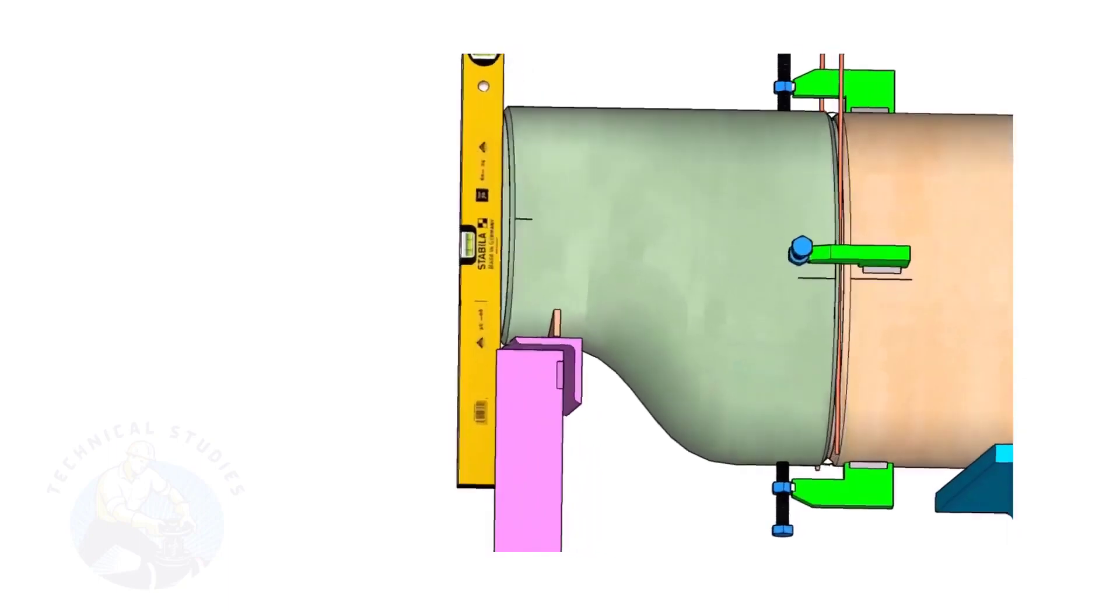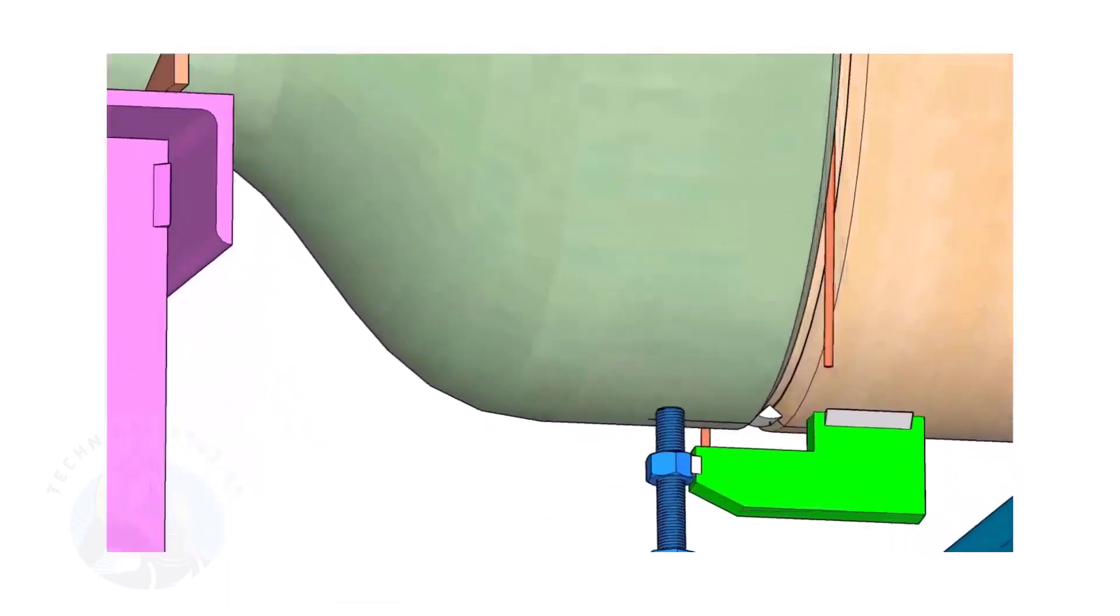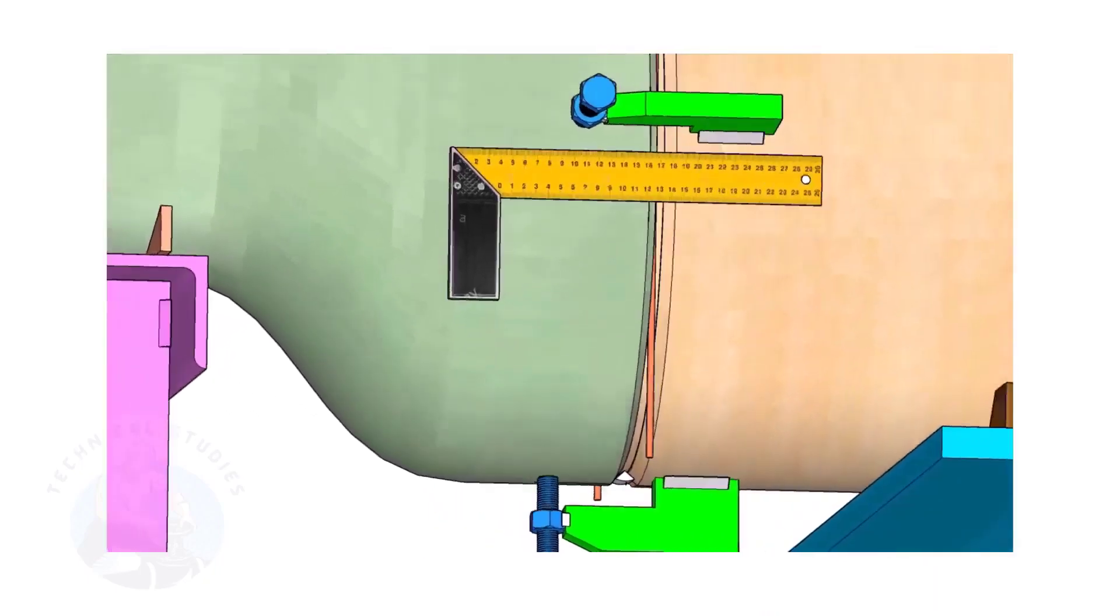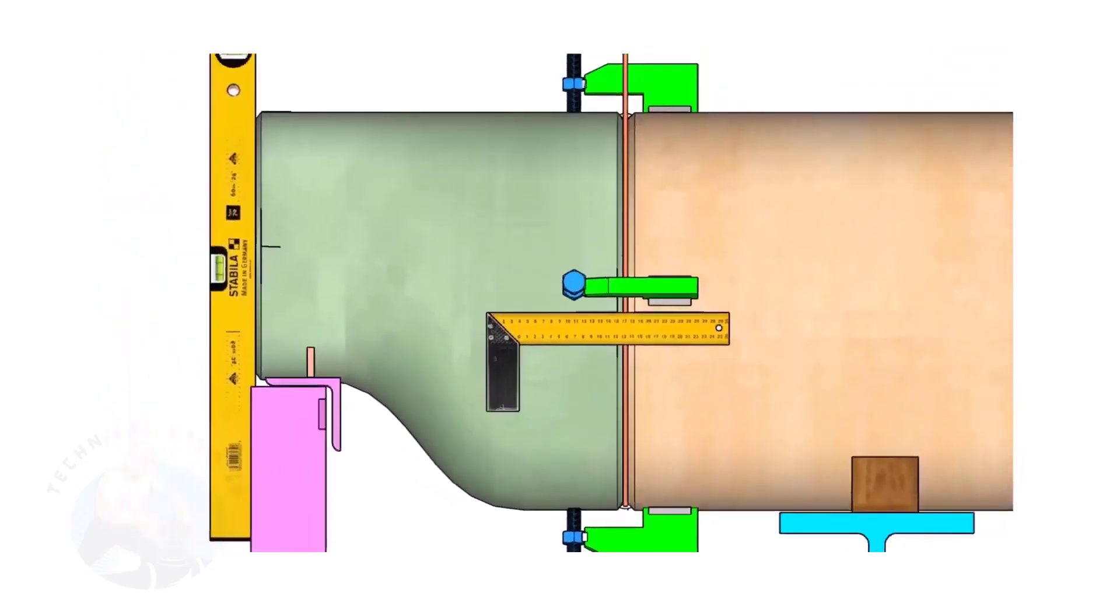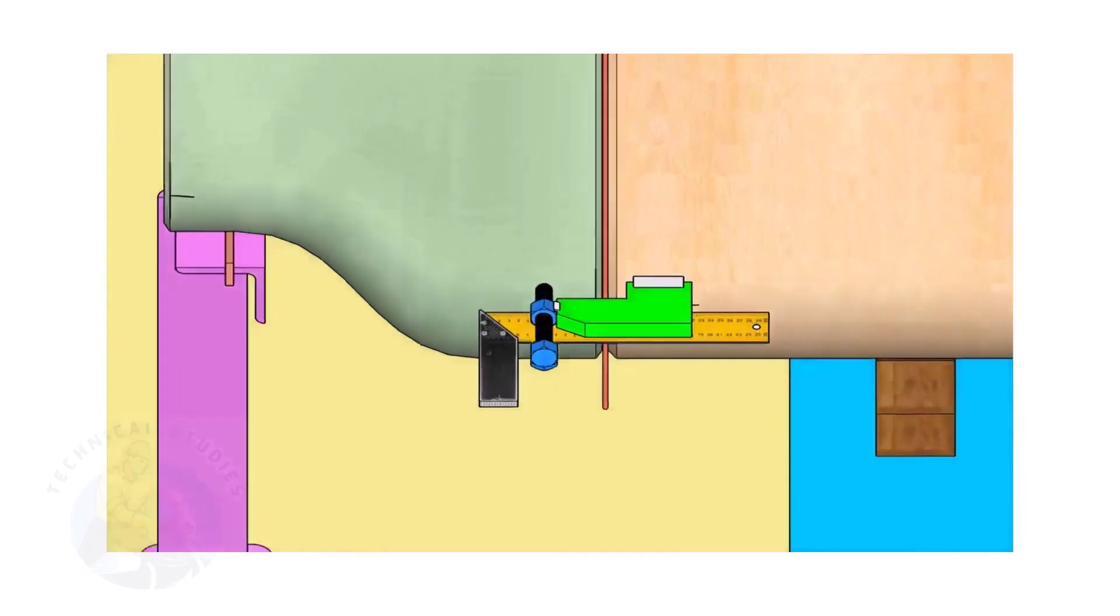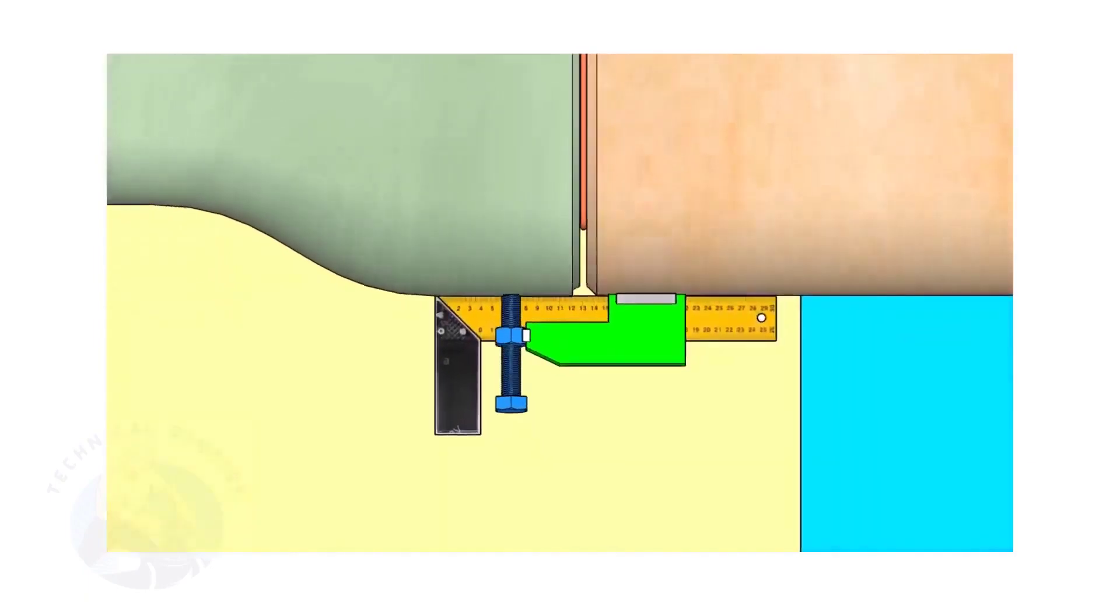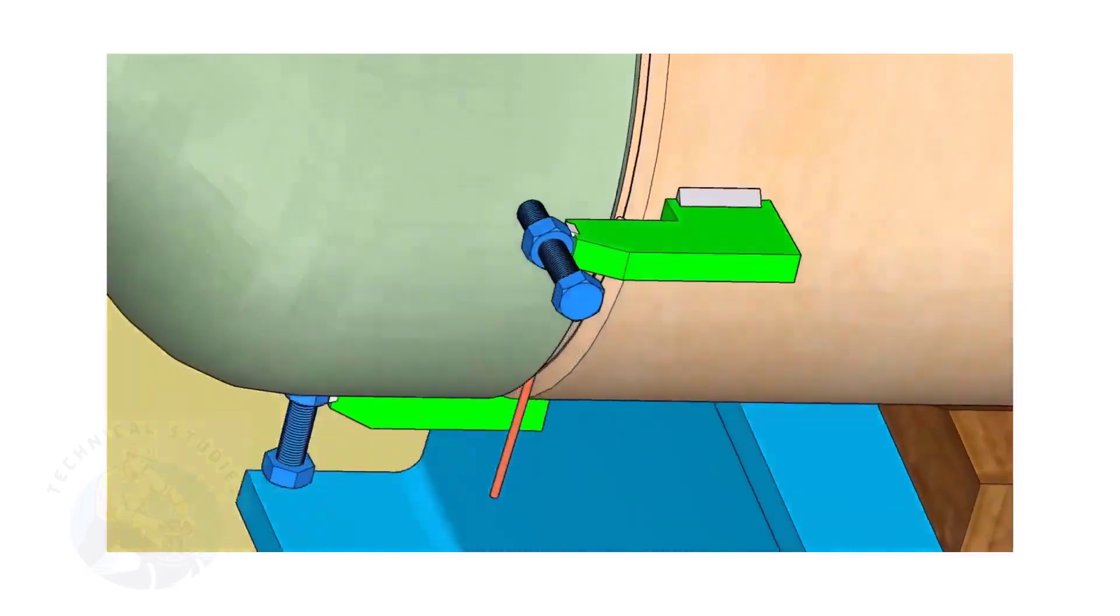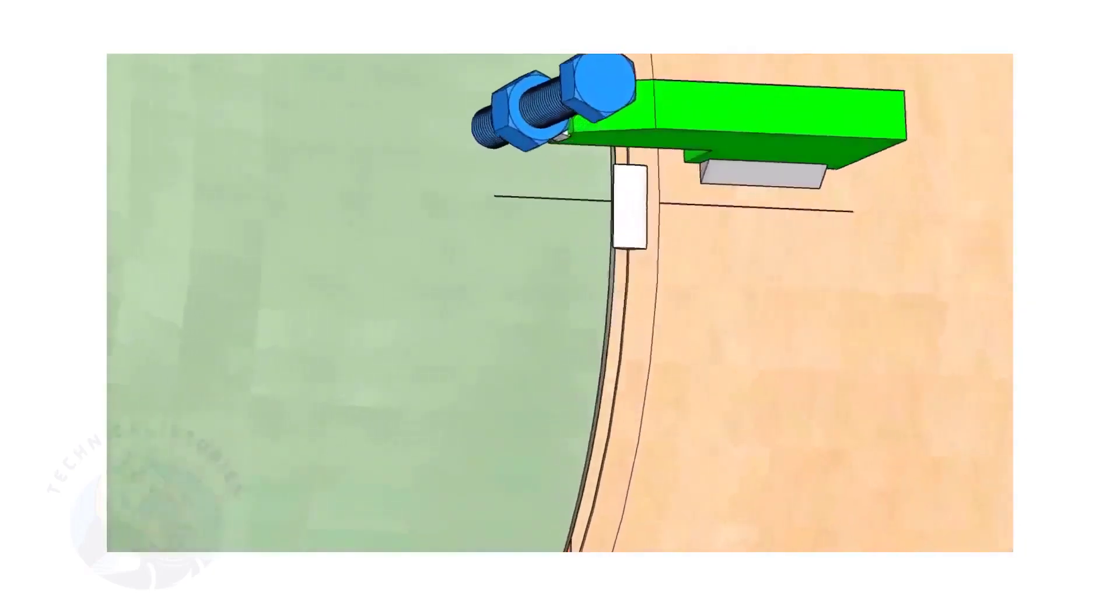Tack weld in the bottom side of the joint. Correct the straightness of the joint on both sides. If required, remove the gap rod. Tack weld on both sides.